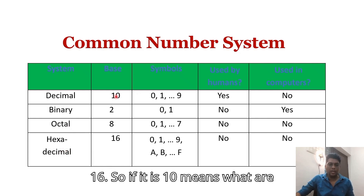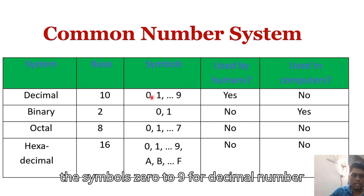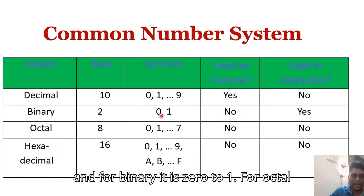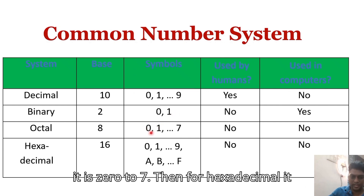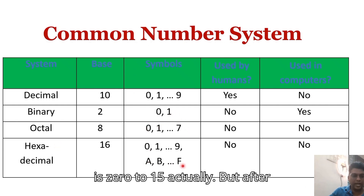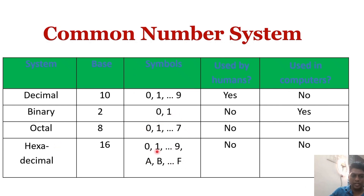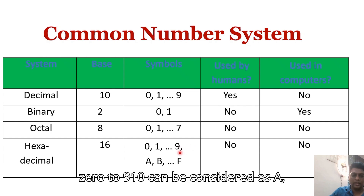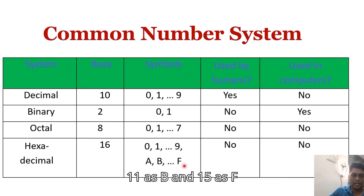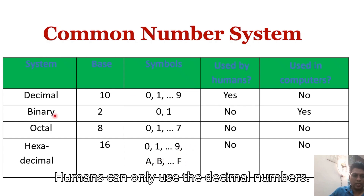For decimal, the symbols are 0 to 9. For binary it is 0 to 1, for octal it is 0 to 7, and for hexadecimal it is 0 to 15. After 0 to 9, 10 is represented as A, 11 as B, and 15 as F.